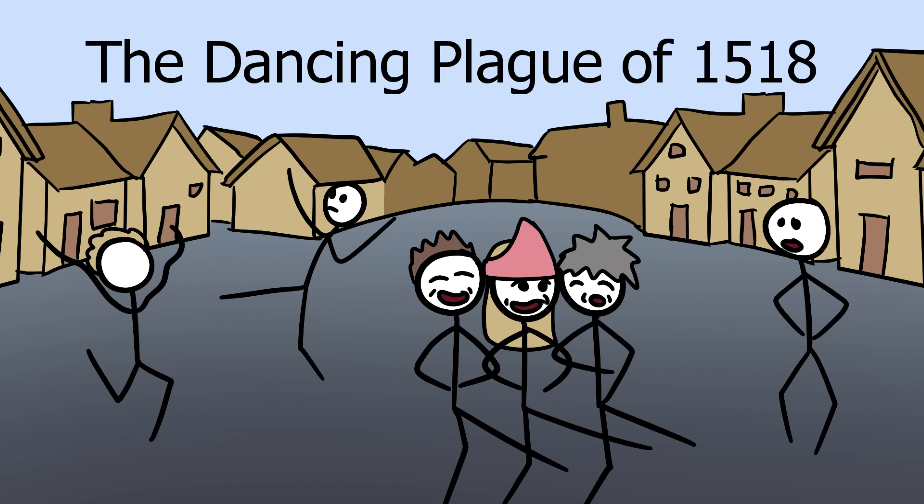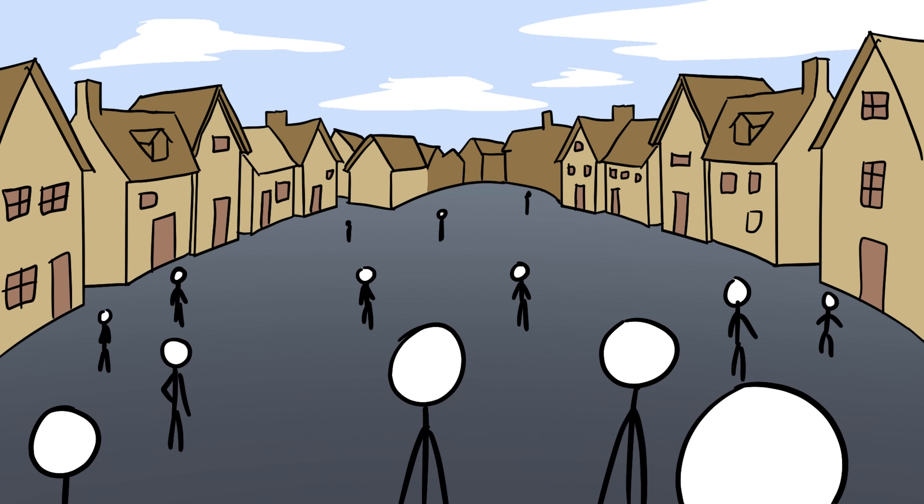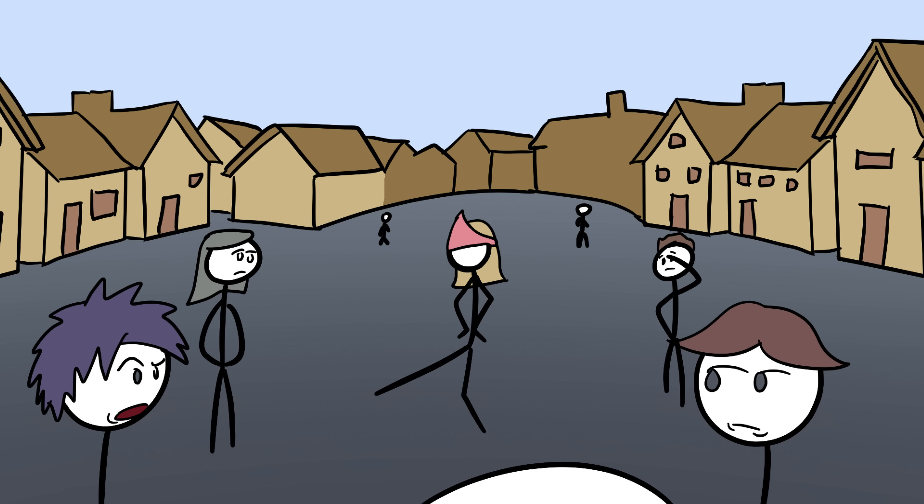Number 7. The Dancing Plague of 1518. In the summer of 1518, the city of Strasbourg, then part of the Holy Roman Empire, experienced one of history's strangest medical mysteries. A woman named Frau Troffea walked into the street and began dancing uncontrollably. She didn't stop for hours.